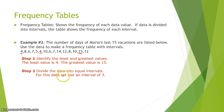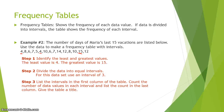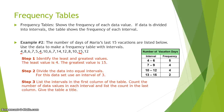Once we have the least and greatest values, we divide the data into equal intervals. For this data set, we'll use intervals of 3: 4–6, 7–9, 10–12, and 13–15. The third step is to list the intervals in the first column of the table, count the data values in each interval, and list that count in the frequency column.